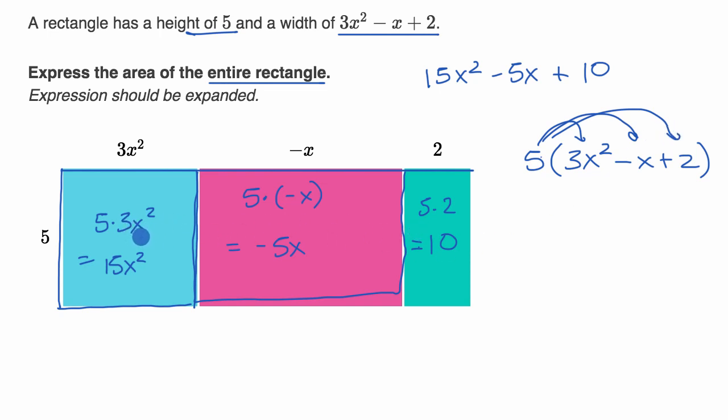Area models, you might have first seen them in elementary school, really to understand the distributive property. And so if you distribute the 5, you get 15x² - 5x + 10. Same idea.